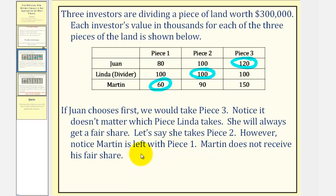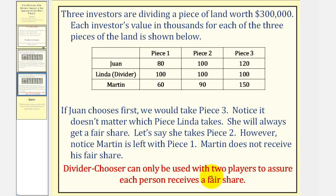This is the reason why the divider-chooser method would not be guaranteed to provide each player with a fair share unless there are only two players. Divider-chooser can only be used with two players to assure each person receives a fair share. I hope you found this helpful.